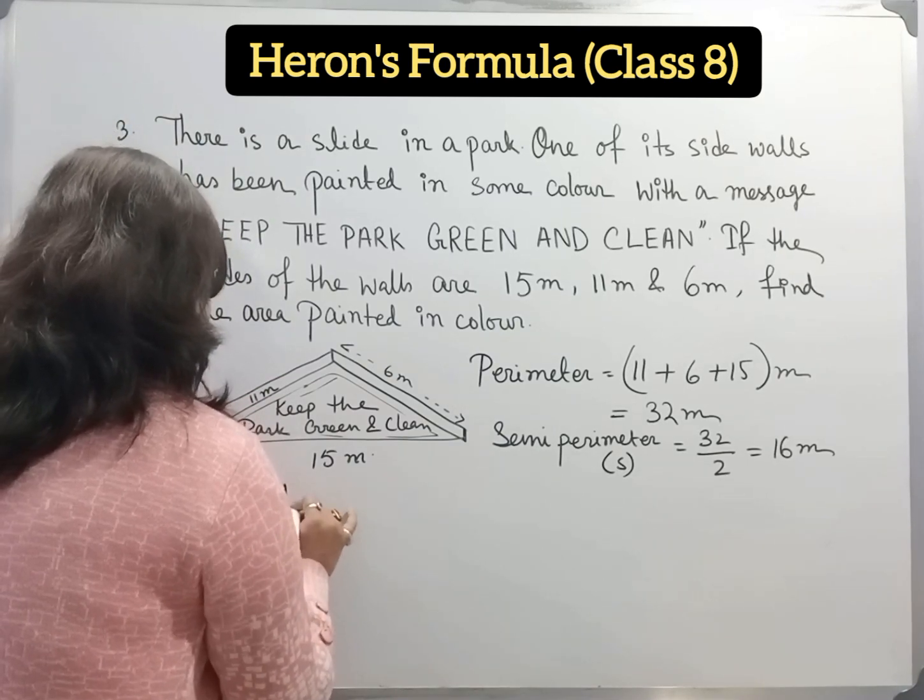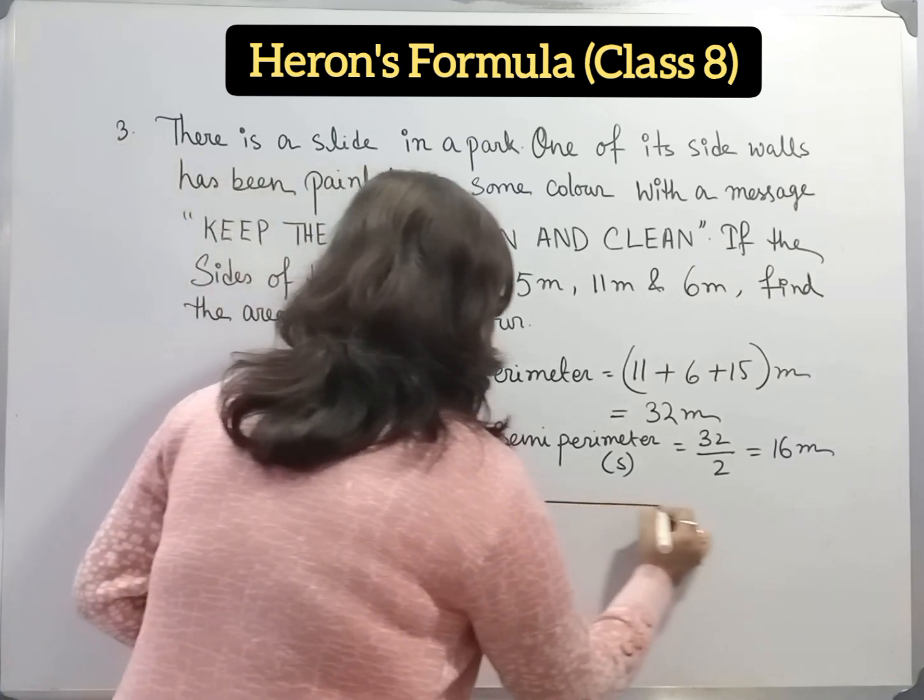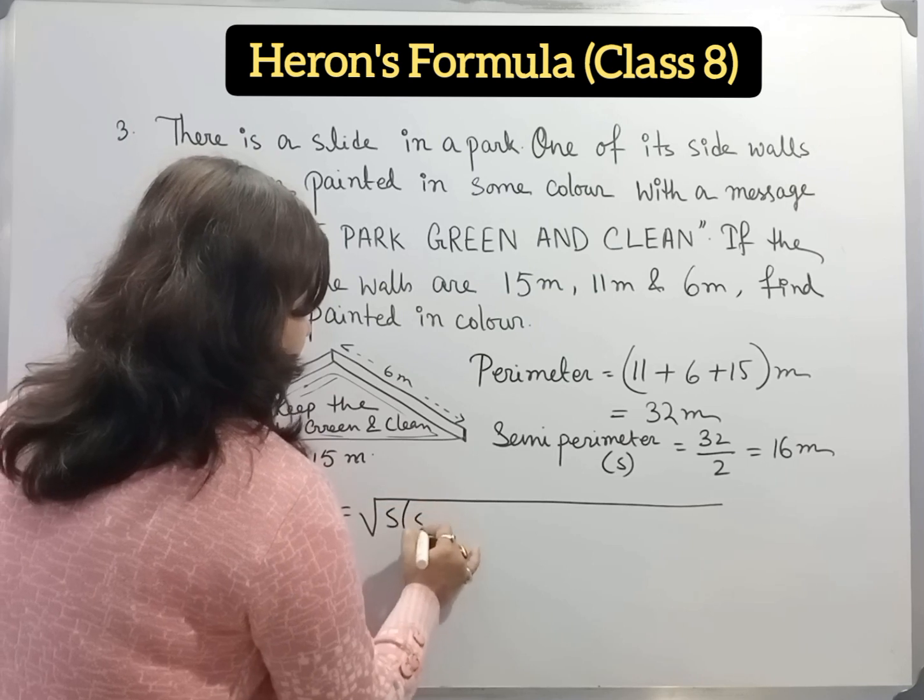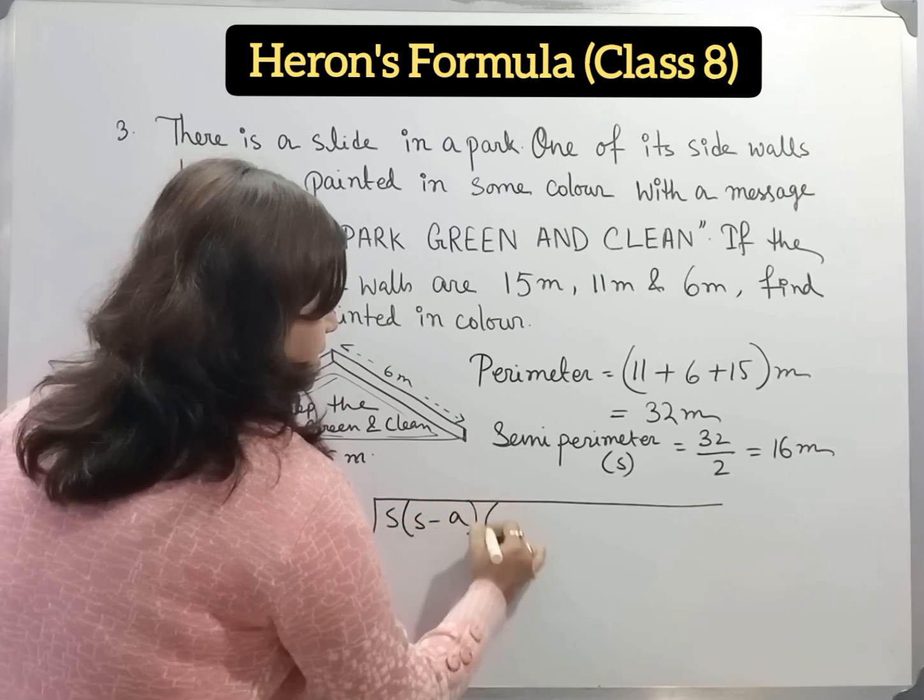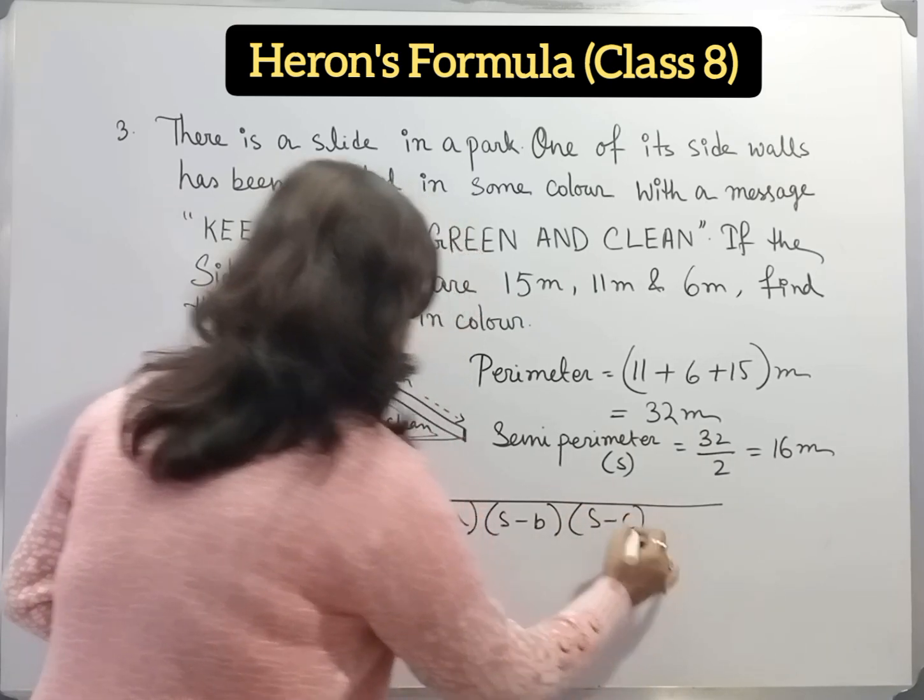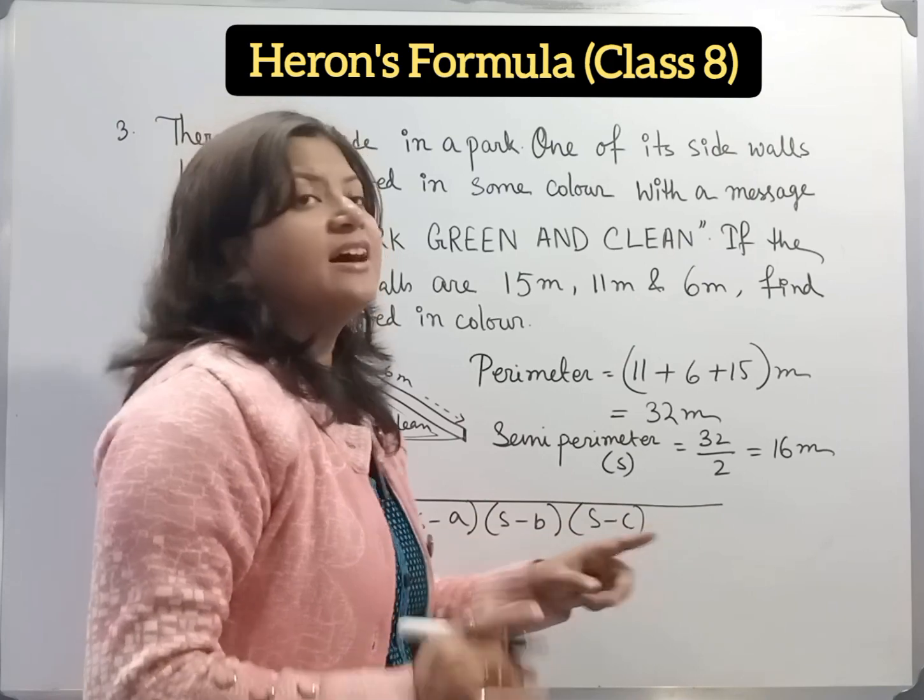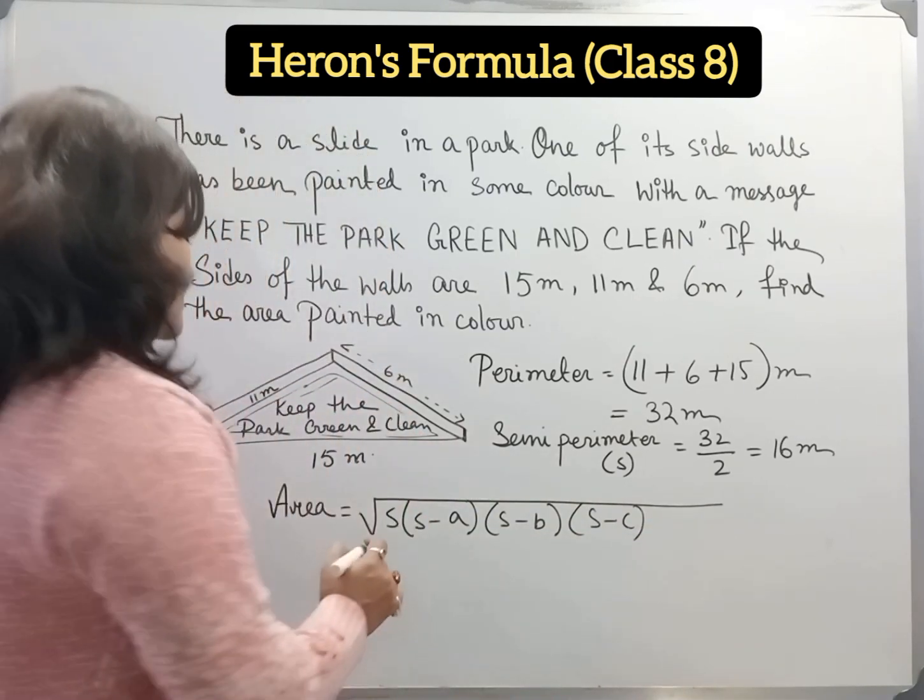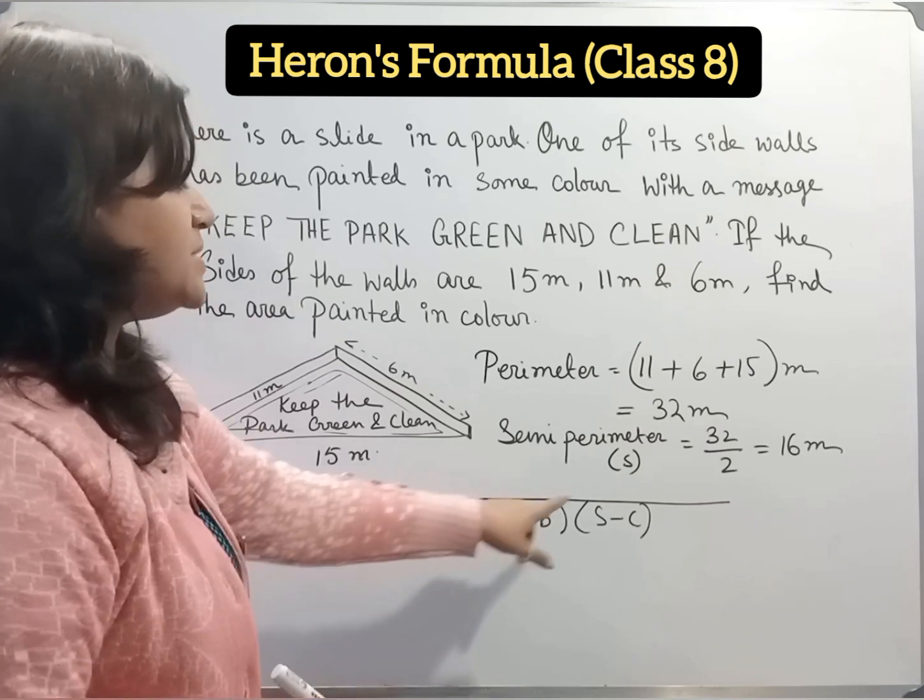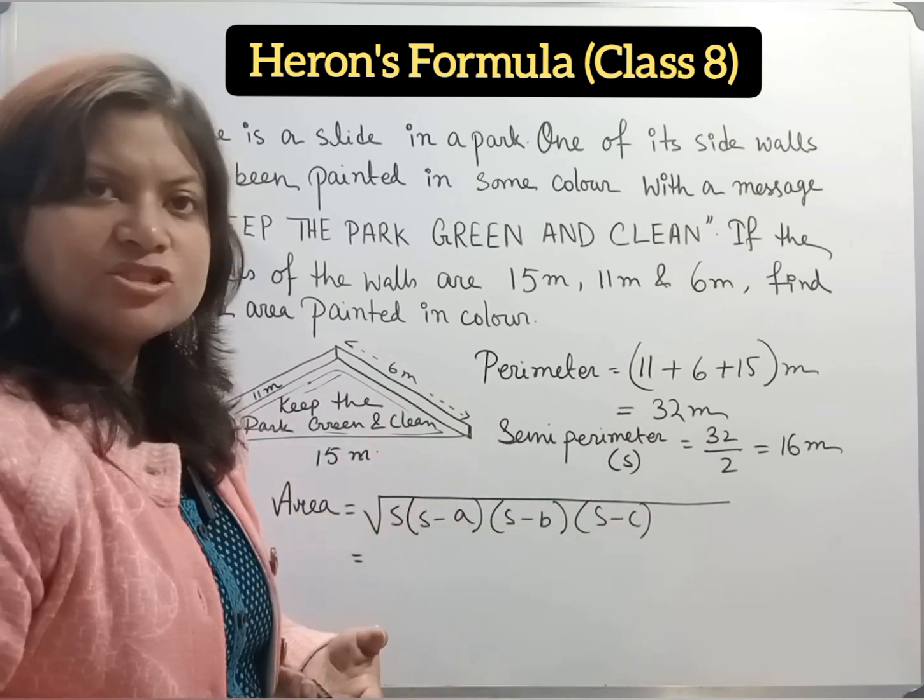Now, area. Area equals square root of S into S minus A into S minus B into S minus C. Here S is the semi-perimeter. A, B, C are the sides of the triangle. Now here we will put the value of S, A, B, C. A, B, C are the sides of the triangle.